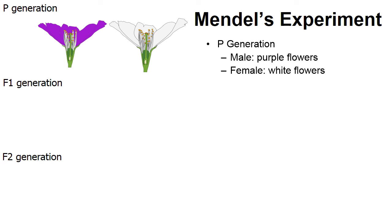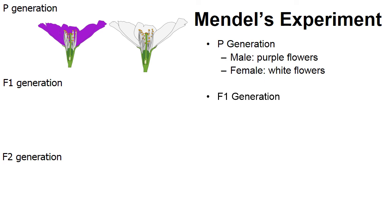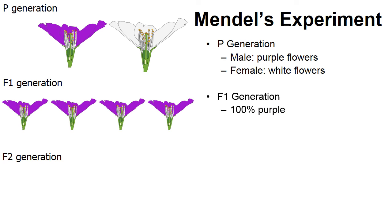He used a brush to transfer pollen from the male flower over to the female flower. The female flower grew seeds, he collected them and planted them in the garden. When the seeds grew, they became the F1 generation — the first generation after the parents. In the F1 generation of Mendel's experiment, 100% of the offspring grew purple flowers, which is interesting considering one of the parents had white flowers.